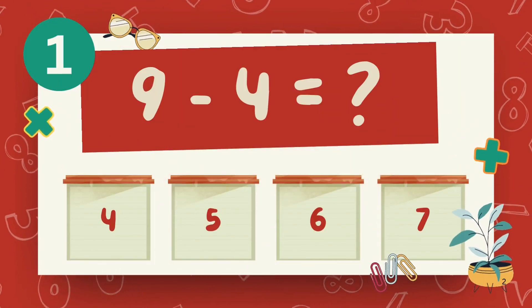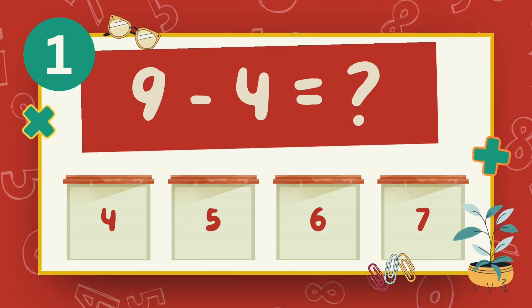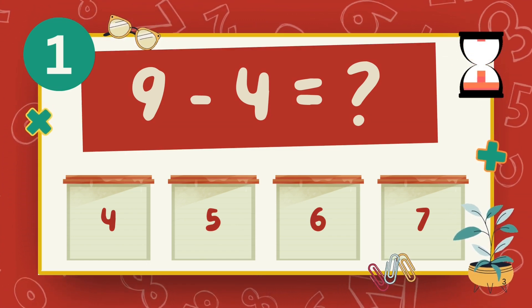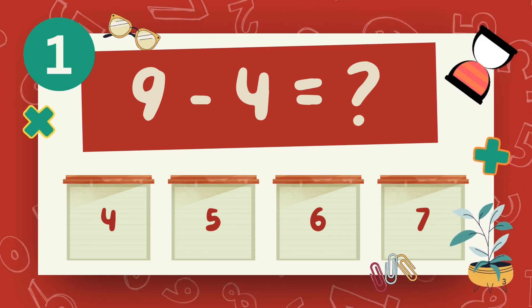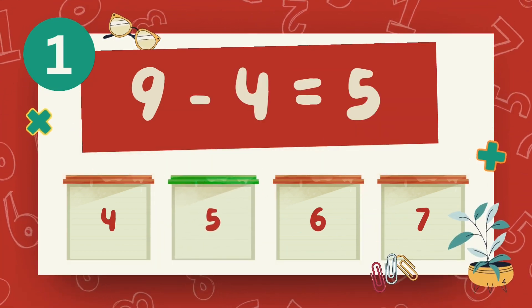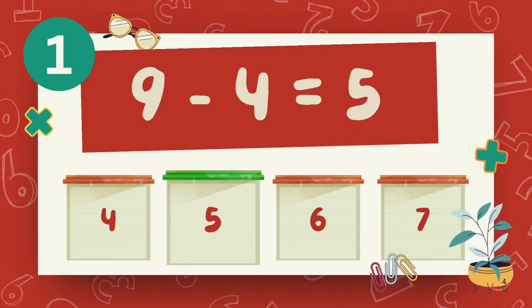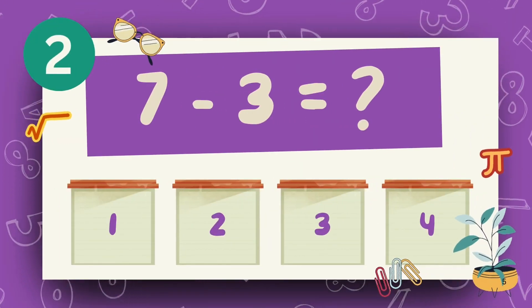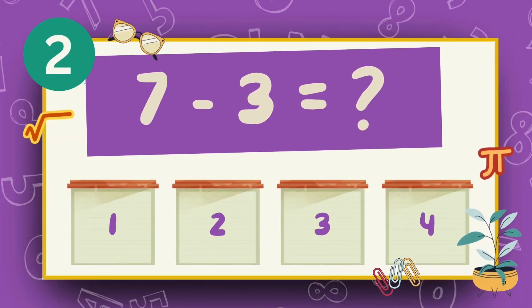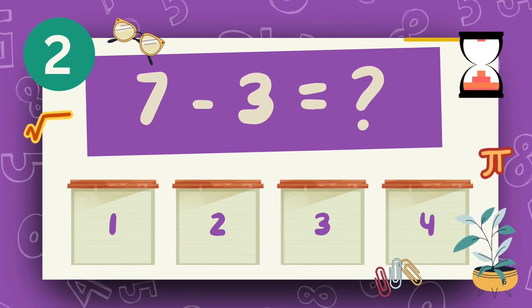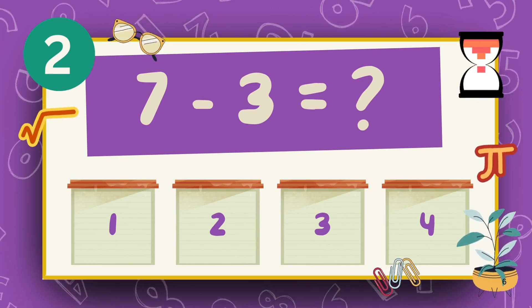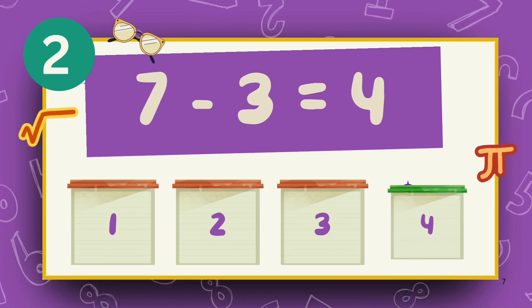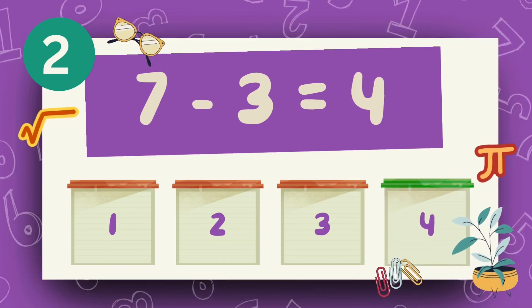What is 9 minus 4? The answer is 5. What is 7 minus 3? The answer is 4.